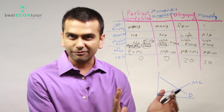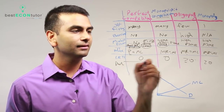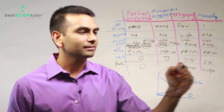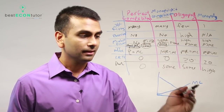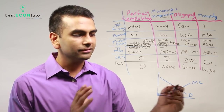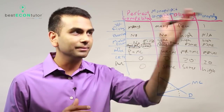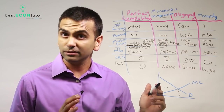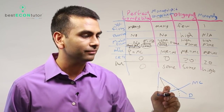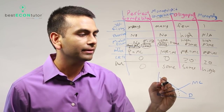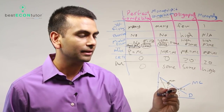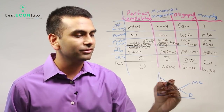Now for the big picture graph in terms of deadweight loss: perfect competition has zero deadweight loss, monopolies have high deadweight loss, and oligopolies and monopolistic competition have some deadweight loss in between. If we draw this out — the demand curve is the same regardless of the market structure. In perfect competition, equilibrium is where supply and demand intersect. In a monopoly, you find MR, set it equal to MC, go up to the demand curve, and that monopoly price creates a large deadweight loss triangle.